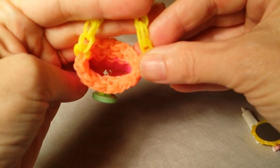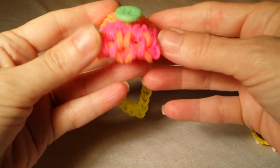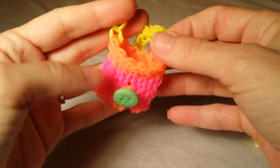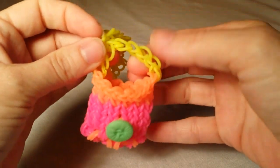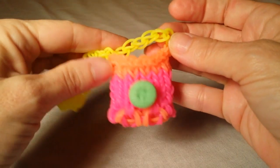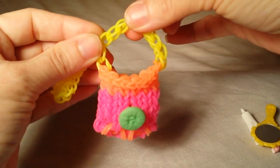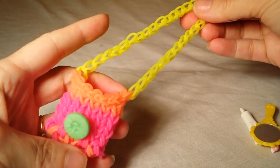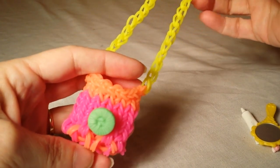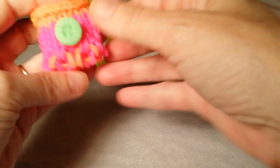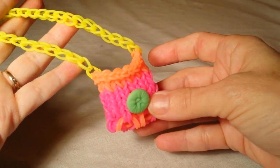So it holds quite a bit. I'm going to show you how to put a button on it. You can make it with just a little short strap if you want so you can use it like a charm, or you can make it with a long strap so it'll fit up over Barbie's shoulder if you want to use it with your doll.